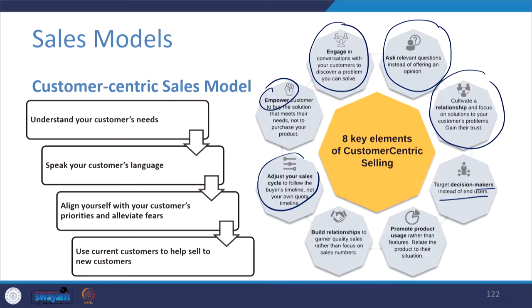In broad terms, customer-centric selling follows a four-step process: understand your customer's needs first, speak your customer's language rather than your own, align yourself with the customer's priorities and alleviate fears. And use current customers to help sell to new customers. If you are doing customer-centric selling and building good relationships, your existing customers will naturally help you reach new customers through them.